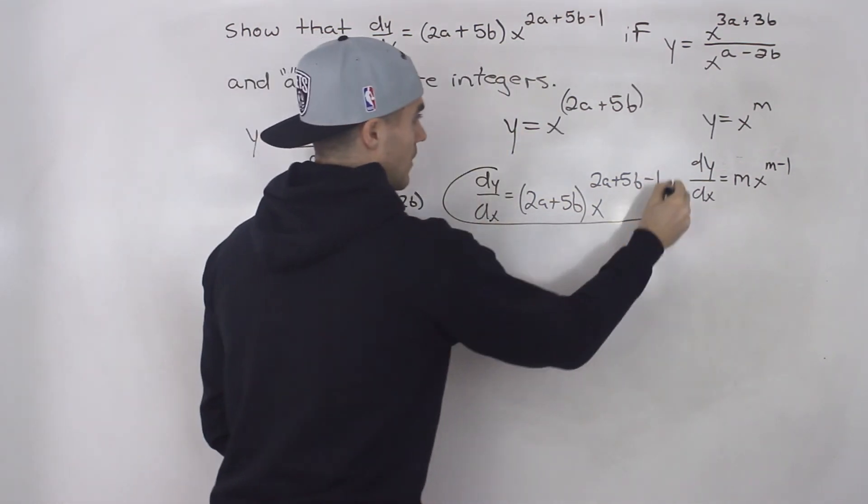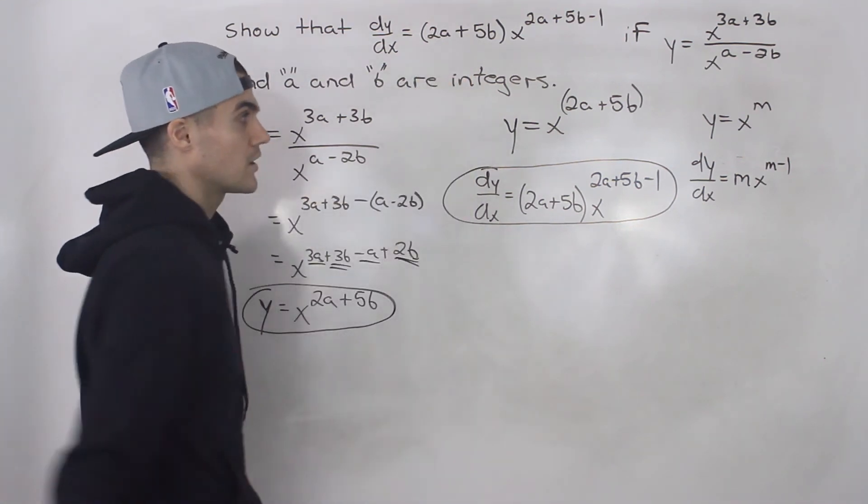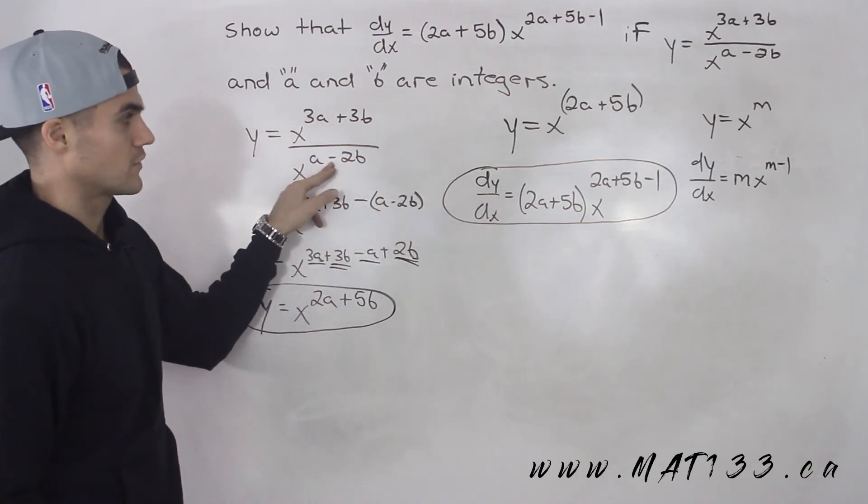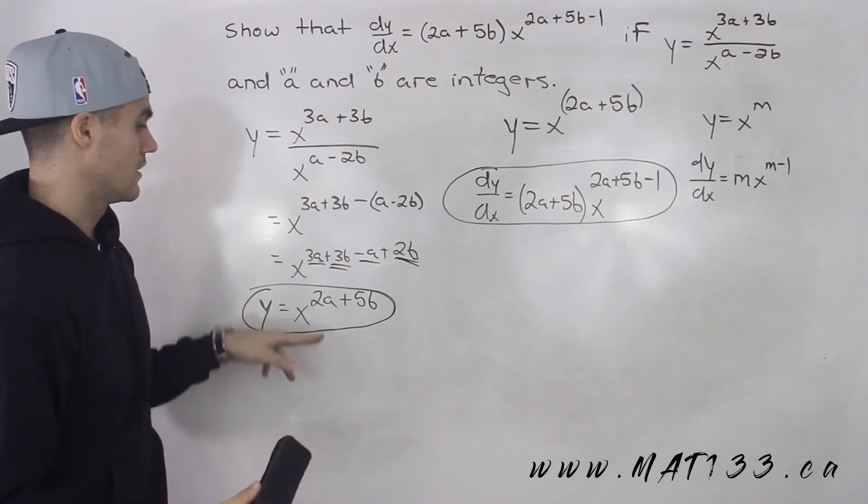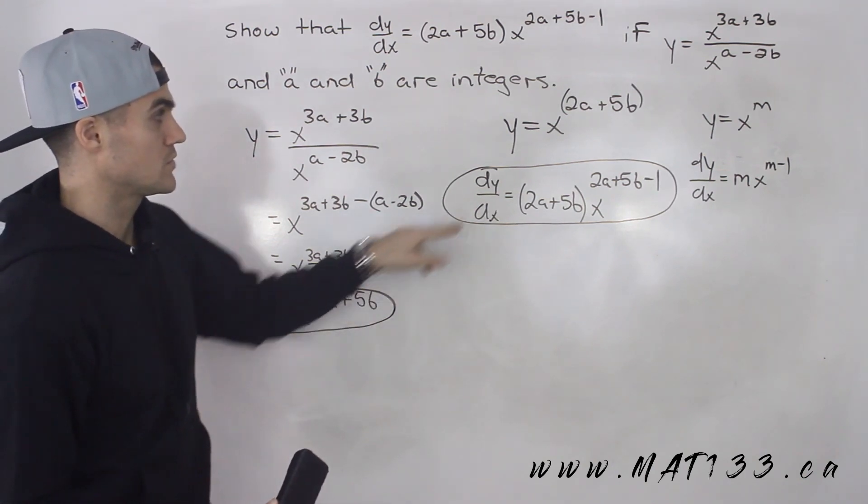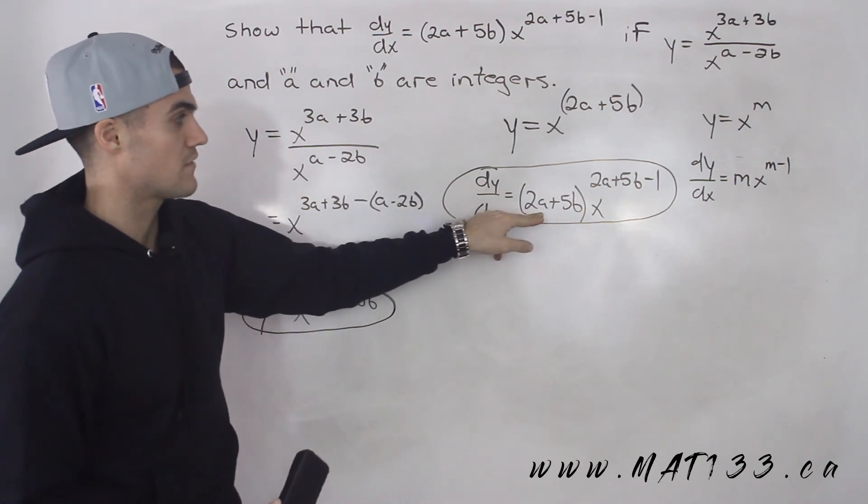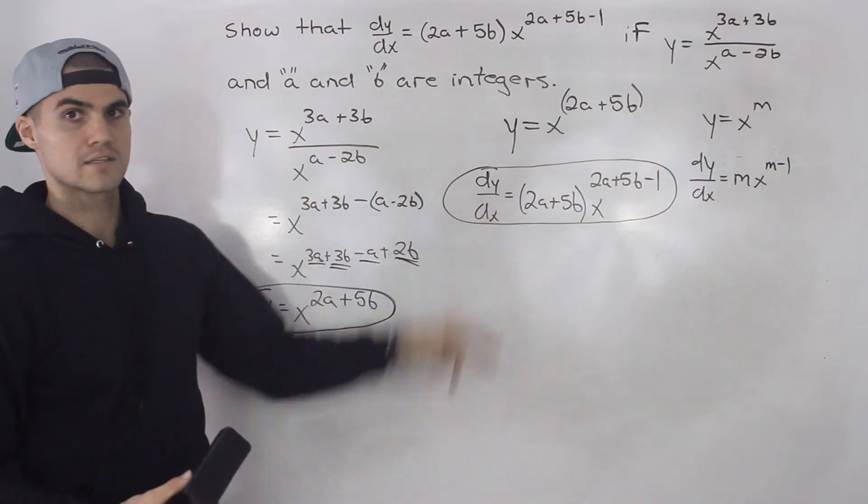Notice how that's what we're trying to show. That's the same expression that we have up here. This is the derivative of this function. The way we got it, we first simplified the function before taking the derivative. Once we simplified the function, we just applied the power rule: brought the exponent down, 2a + 5b in brackets, then subtracted 1 from the exponent. That's the final answer.